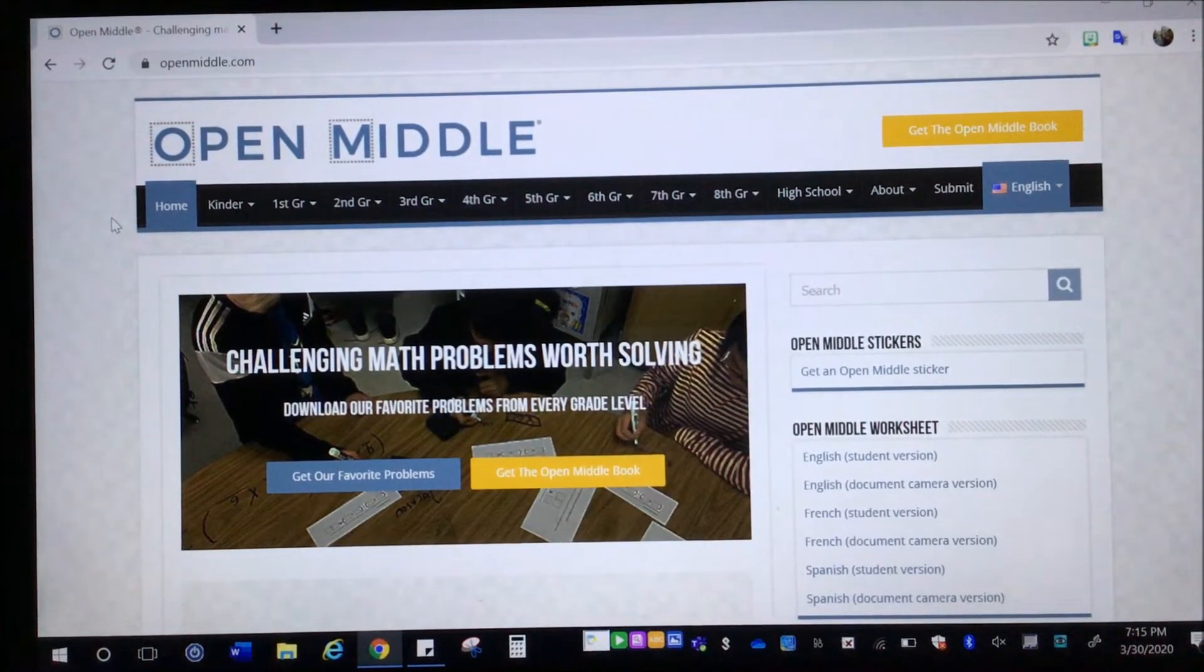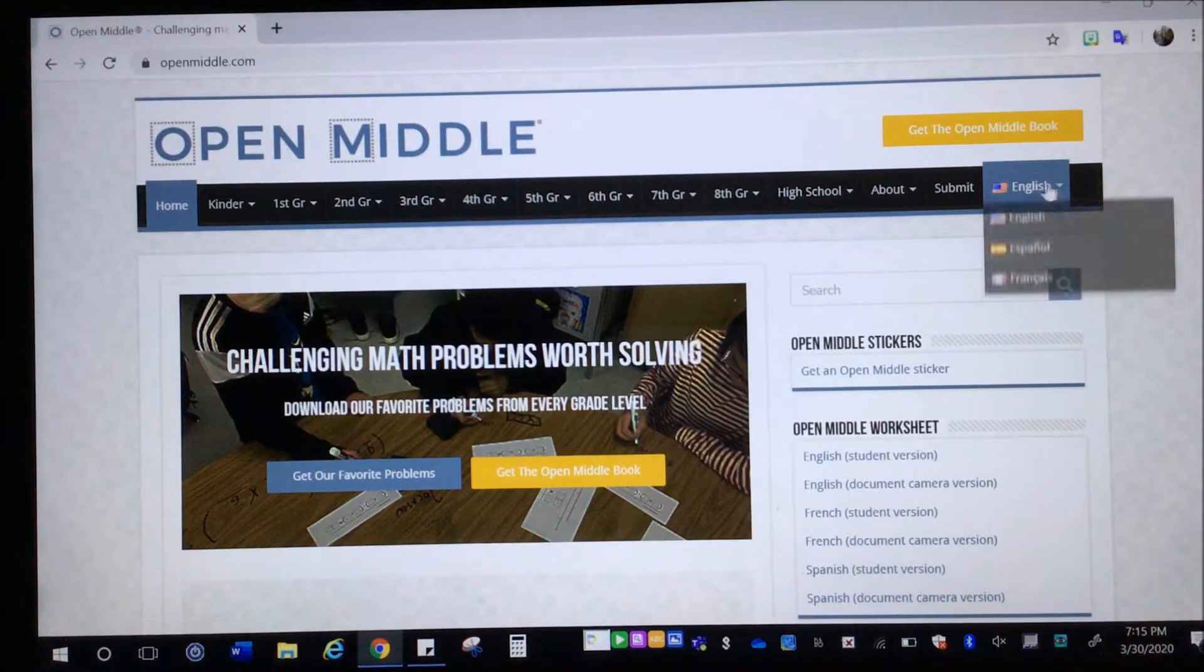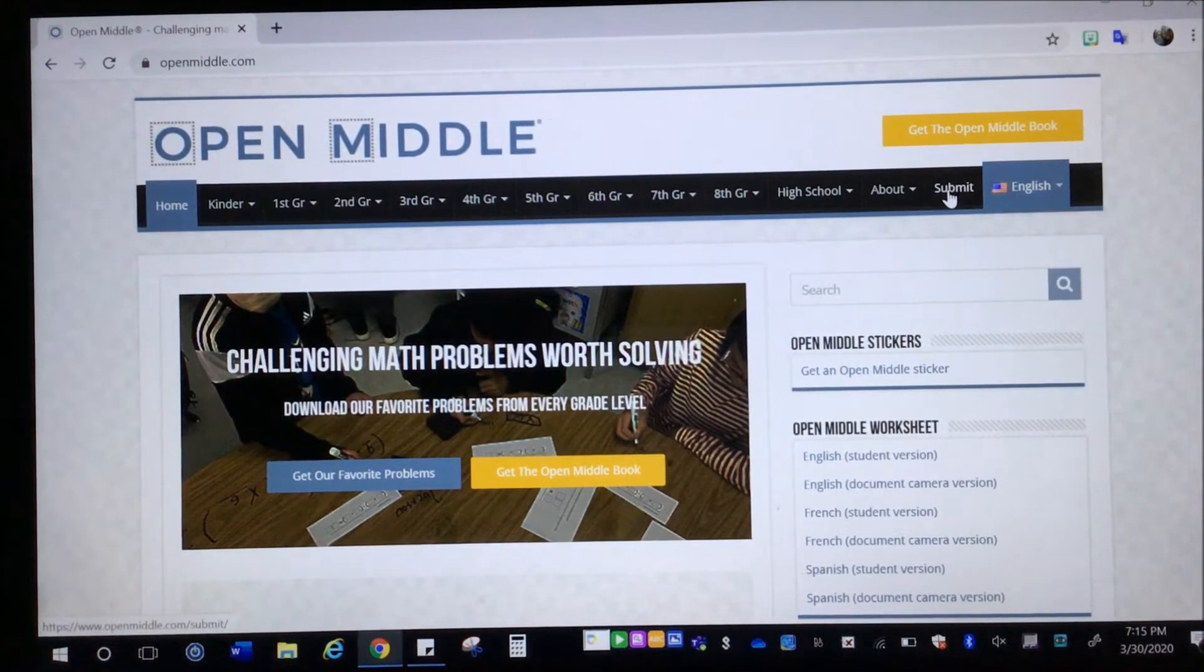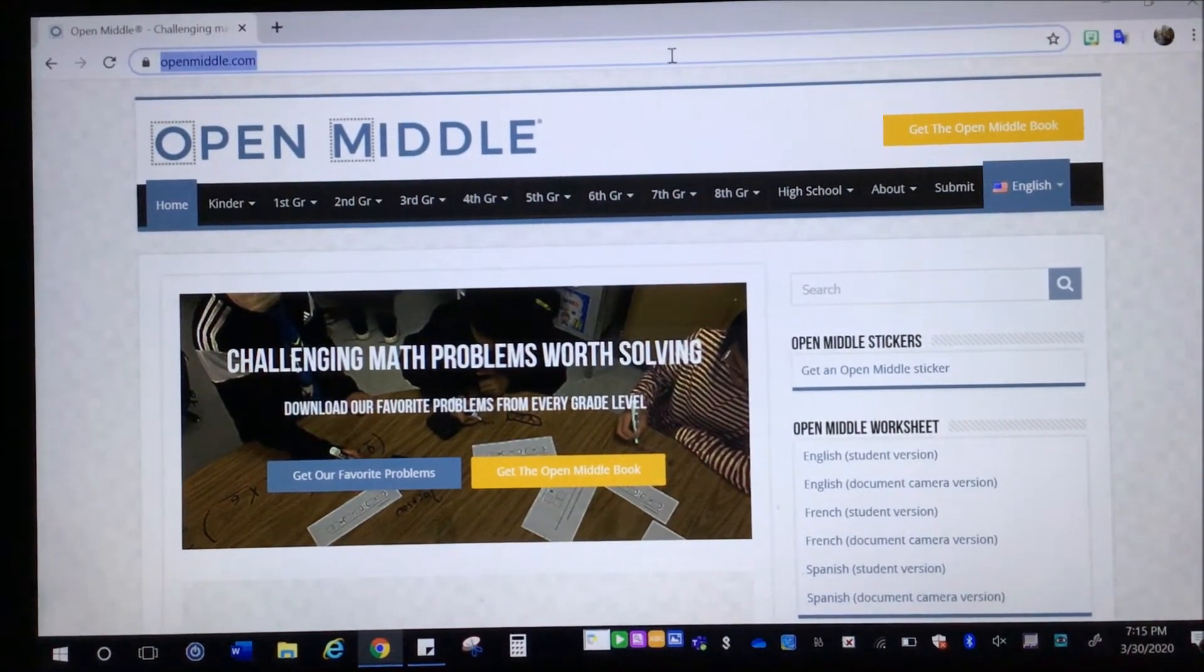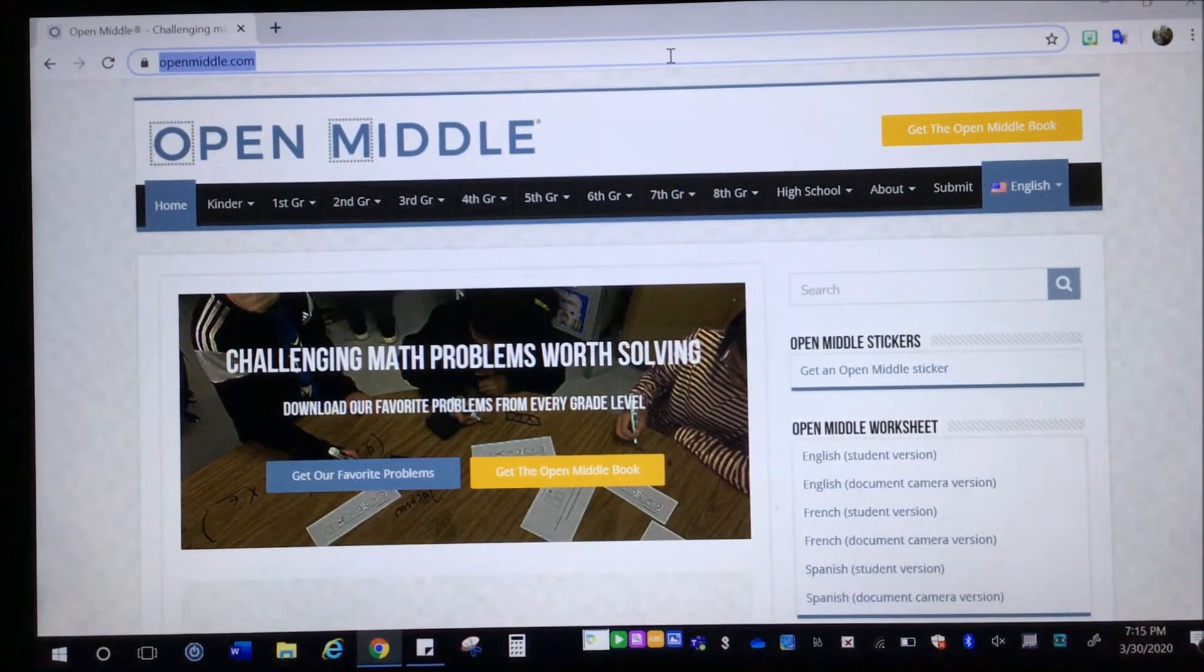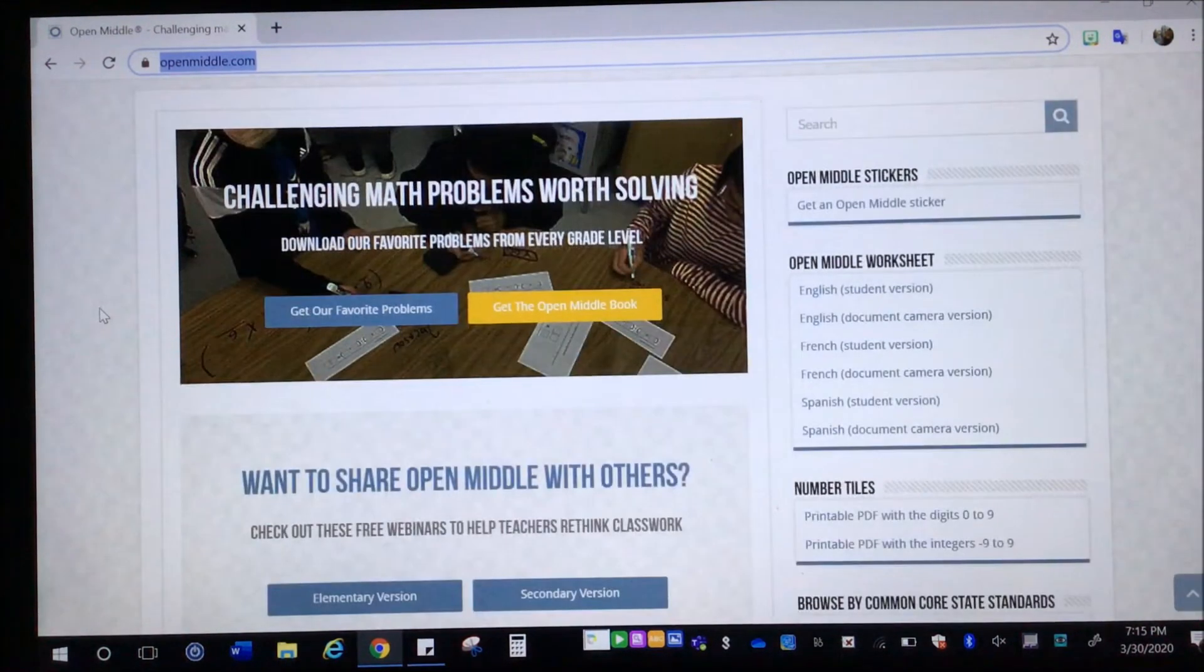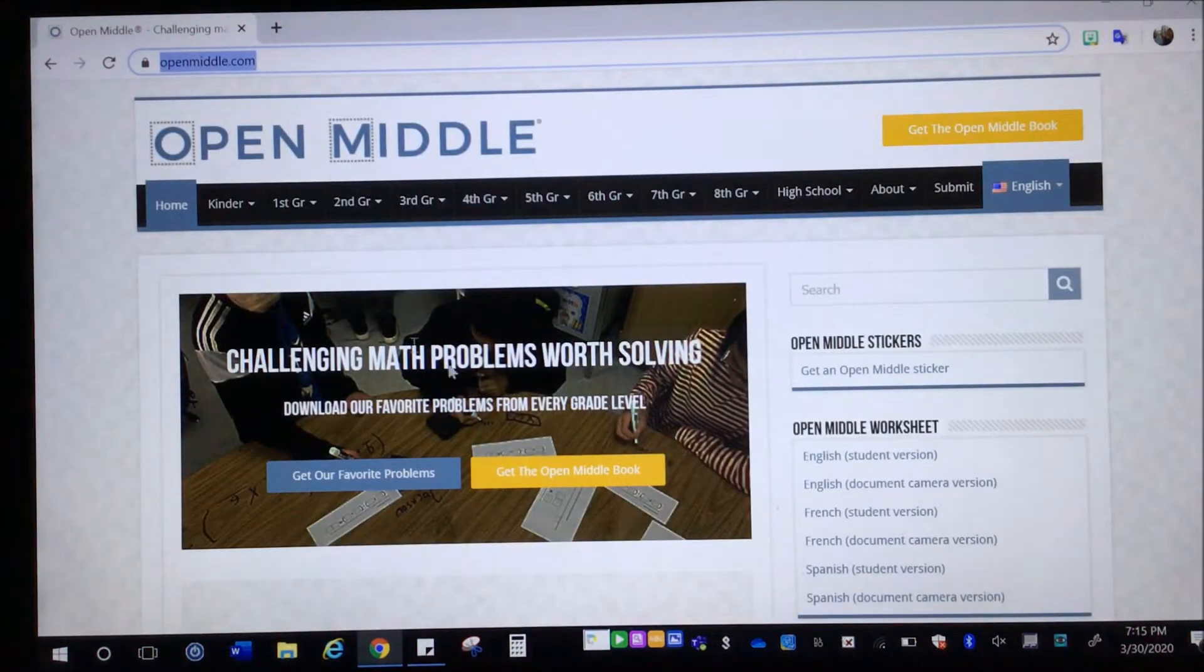Okay, so this is the OpenMiddle website. Before I forget to mention, you can change the language from English to either Spanish or French. And there is a submit button where you can send some of your own ideas. So the website, as you can see, is just openmiddle.com and you can see at home. This is the home page where it just sort of shares favorite problems, how to share with others. Some key things over there.